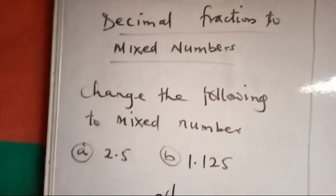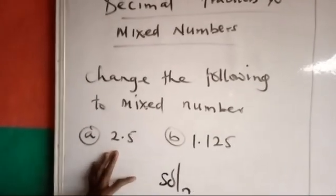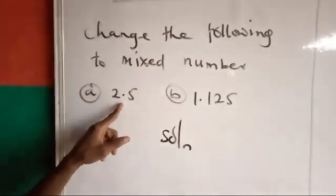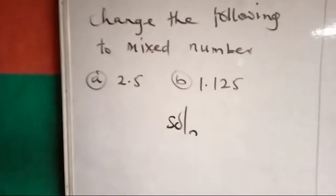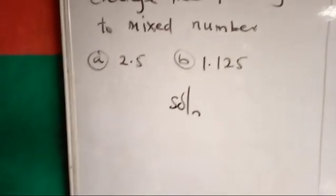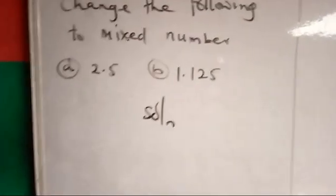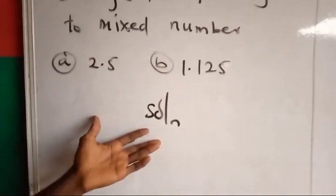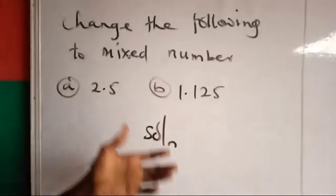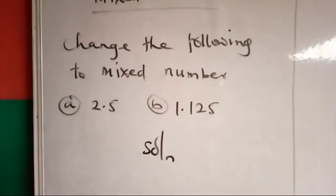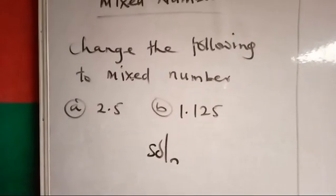Now to do that, the first thing you want to do is convert the decimal fraction to improper fraction first. Remember I taught you how to convert to improper fraction. Put it first to improper fraction, from there you can change to a mixed number. First put it to improper fraction, from there you can change to a mixed number, right.